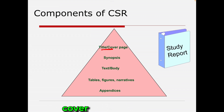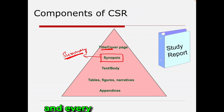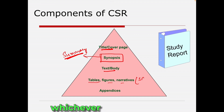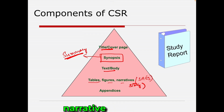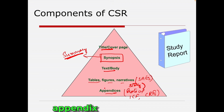The synopsis is a summary — because your document can be 300, 400, or 500 pages, a summary is an essential part of every clinical document, including the protocol. The text and body section is where you mainly discuss the design, tables, figures, and narratives. Narratives are written accounts of adverse events that occurred in the clinical trial, presented as a story. Appendices include documents such as the protocol, ICF, and CRFs.